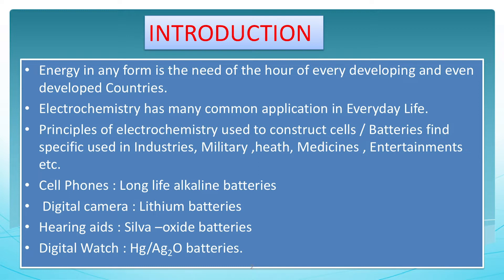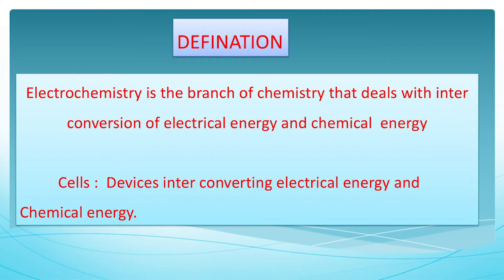The definition of electrochemistry is very simple: electrochemistry deals with the interconversion of two forms of energy — electrical energy and chemical energy. The devices used for such interconversions are called cells.